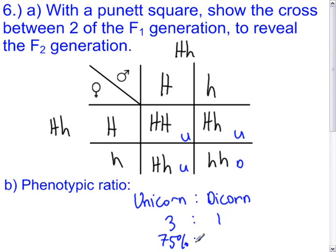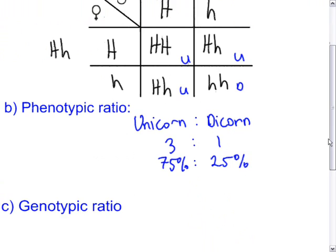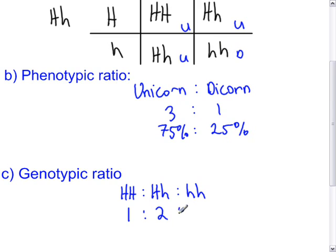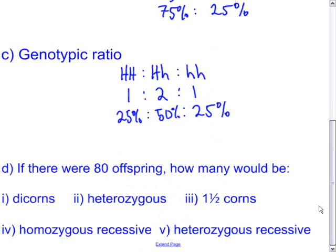You may also express ratios as percentages: 75% unicorn to 25% dicorn. For the genotypic ratio, we have homozygous dominant, heterozygous, and homozygous recessive — one HH, two Hh, and one hh, giving a 1:2:1 ratio. As percentages, that is 25% homozygous dominant, 50% heterozygous, and 25% homozygous recessive.